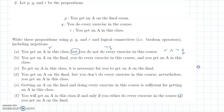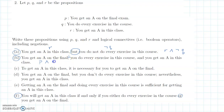For part B: 'You get an A on the final, you do every exercise, and you get an A in this class.' When things are separated by commas we're saying all of these things happen — that's a conjunction: P AND Q AND R.